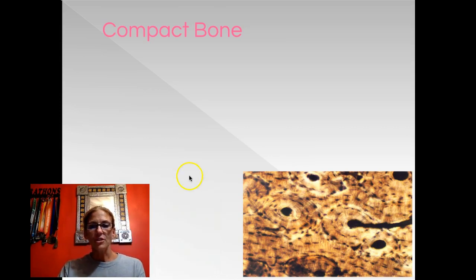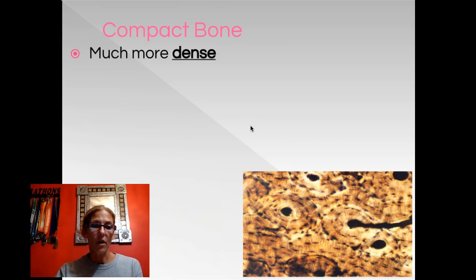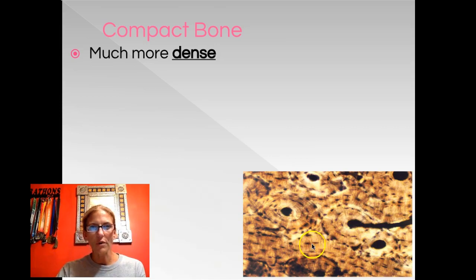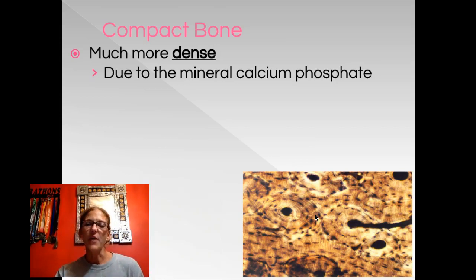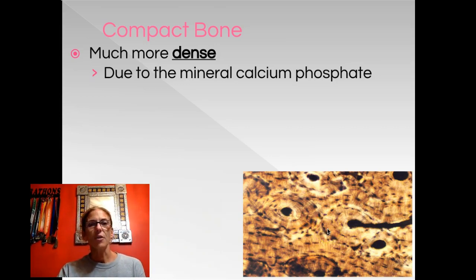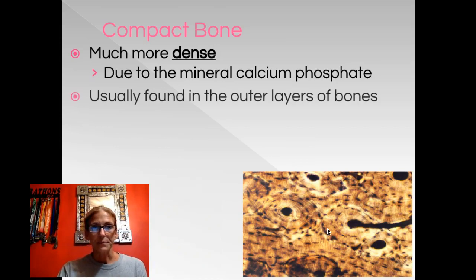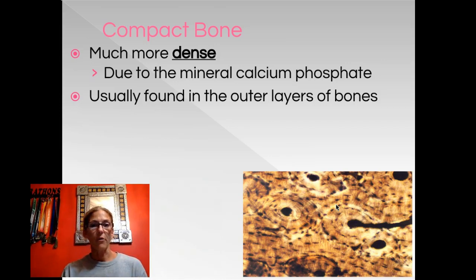Compact bone is considered much more dense — you don't see a lot of holes or spaces in between, so it's very dense. This is due to mineral salts: calcium and phosphate make up the hardness of bone. Also found here is collagen, which gives your bone strength. Compact bone is usually found in the outer layers of bone because it's compact, dense, and protective.